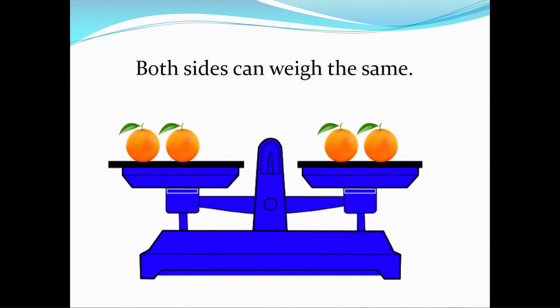Both sides of a balance scale can weigh the same, and another word to describe the same is equal. On one side we have two oranges, and on the next side we have two oranges as well. Our scale shows that they are equal in mass or weight.